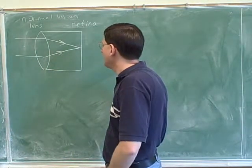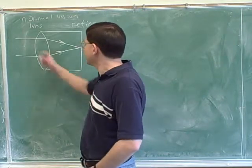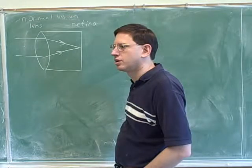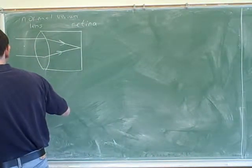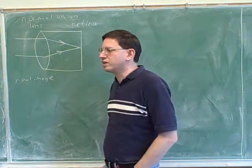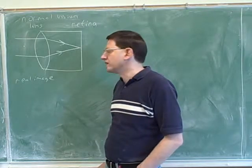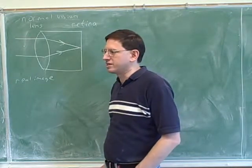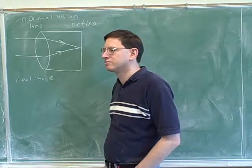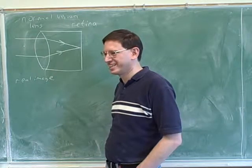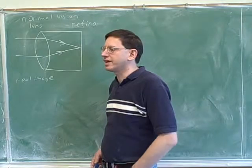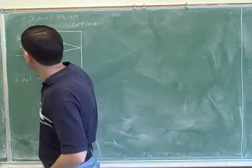Let's look at a couple things about the way the eye works. Is the eye creating a real or a virtual image? A real image is on the same side as the outgoing light, and a virtual image is on the opposite side. Which side is the outgoing light on here — the left or the right? The right side is the front of the eye.